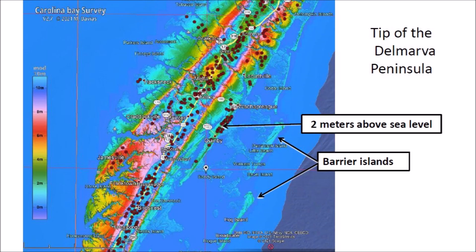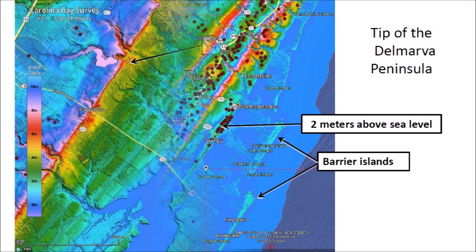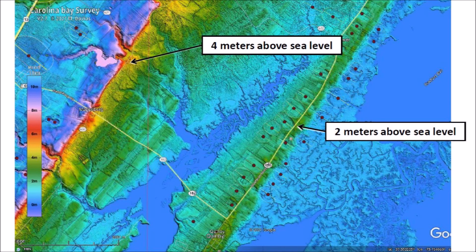Moving northward along the tip of the Delmarva Peninsula, we find some ghostly bays that are about to disappear at 2 meters above sea level. Barrier islands protect these low-lying bays from the open Atlantic Ocean. It is remarkable that the terrain with higher elevation at 4 meters above sea level does not have any Carolina Bays, when the lower terrain at 2 meters above sea level still conserves the outlines of the bays. This can only be explained by land subsidence, which causes this region to have the highest rate of sea level rise on the Atlantic coast of the United States. Land subsidence can take some bays from a higher level to a lower level, which means that some bays found at 2 meters above sea level could have been originally at a higher elevation.